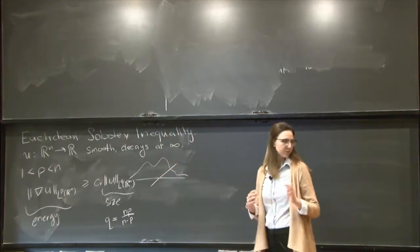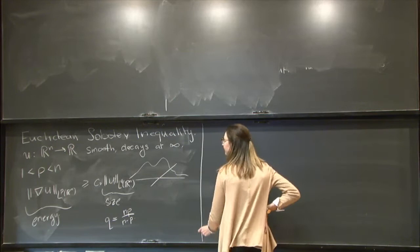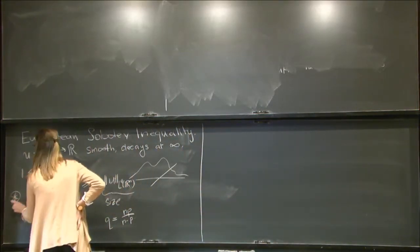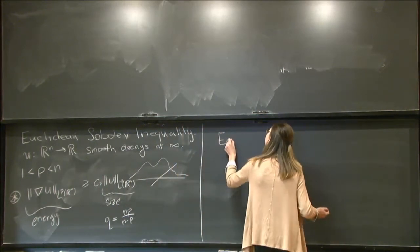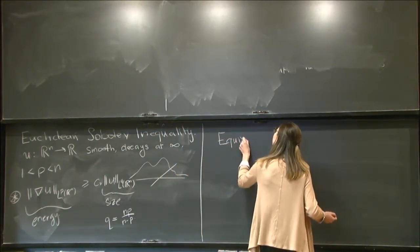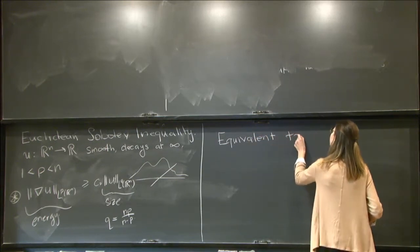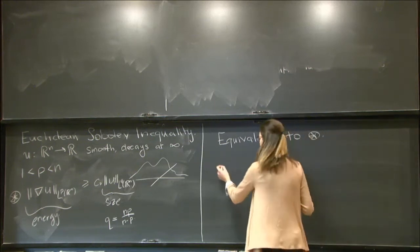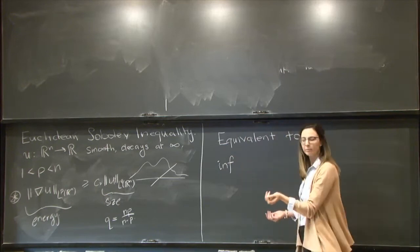The principle here is the energy of some function controls its size. There's an equivalent perspective we can take, which is from the variational side of things. So let me go ahead and call the Sobolev inequality star. And so an equivalent way to view this is the following.